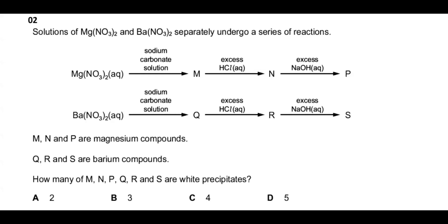Next question: solutions of magnesium nitrate and barium nitrate separately undergo a series of reactions. Magnesium nitrate reacts with sodium carbonate solution to give magnesium carbonate (M), then with excess HCl to give magnesium chloride (N), then with excess NH₃ to give magnesium hydroxide (P).